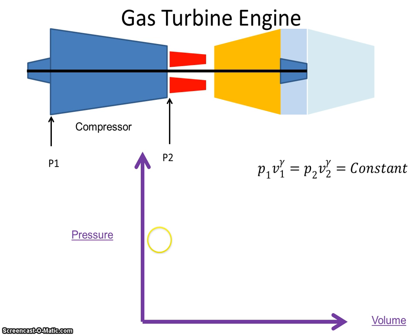So if we take the gas turbine and just quickly go through the Brayton cycle again, air comes in here at P1. We're going to put it through the compressor, so we're going to do work on it and compress the air so its volume decreases and its pressure increases.